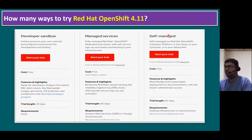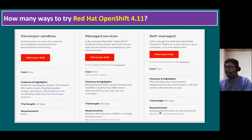We also have a self-managed method. If you want to try it, you can run it on a Red Hat OpenContent platform in the cloud, on your computer, or in your data center. There is no cost, and the trial period is 60 days. The requirement is either existing infrastructure or any cloud account — not only AWS and Google, but other clouds as well.